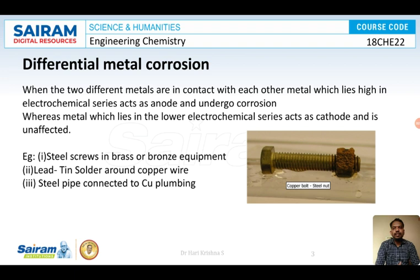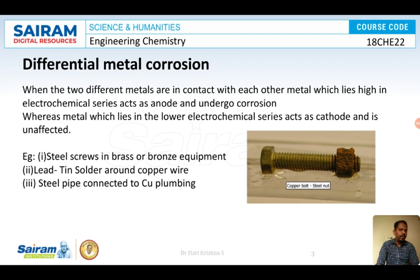For instance, let us consider iron and copper in contact with each other. Iron acts as anode and undergoes corrosion, whereas copper is protected from corrosion. This is because in the electrochemical theory of corrosion, the cathodic reaction is either reduction of H⁺ ions or reduction of water — the metal acting as cathode is not involved in the reaction and therefore does not undergo corrosion.